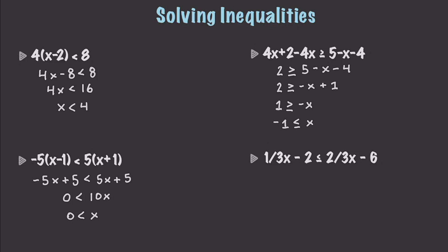For one final example, we'll throw in fractions. We get one third x, and we add 2 to both sides, giving us less than or equal to two thirds x minus 4. We subtract two thirds from one third, ending up with negative one third x is less than or equal to negative 4. Solving for x — and flipping the comparison operator because we divide by a negative — gives us x is greater than or equal to 12.